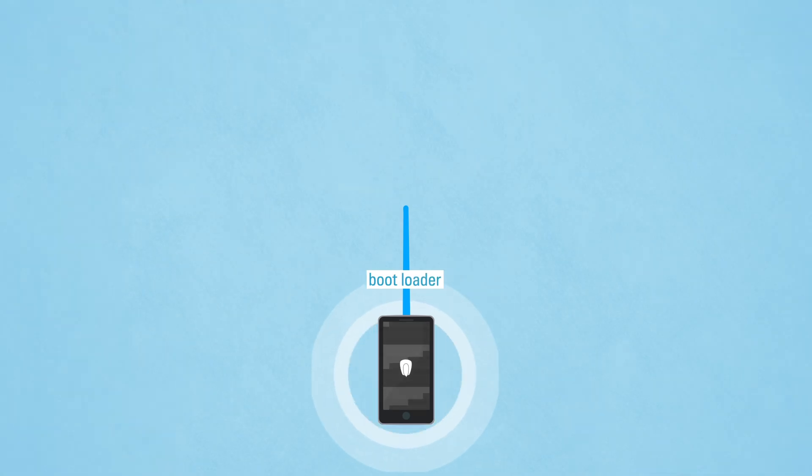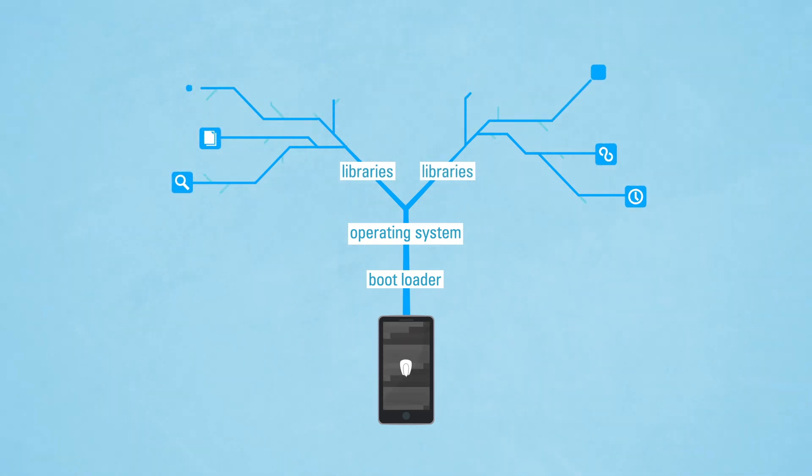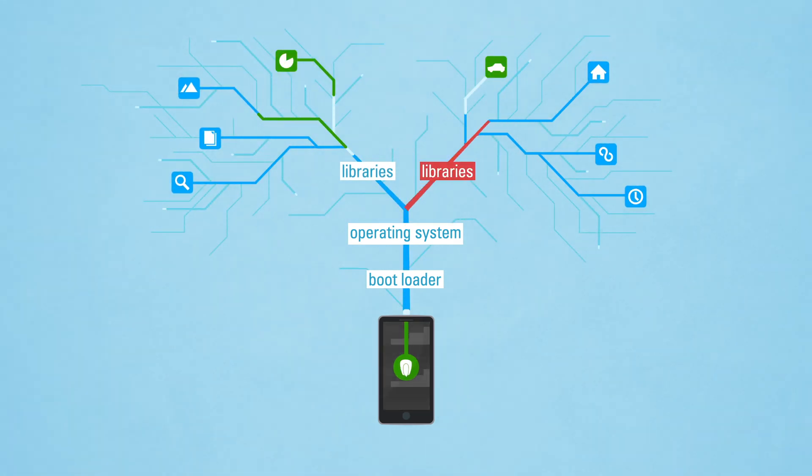We start with the mobile root of trust that says this is the right operating system that booted, and then the operating system can tell us more about stuff that it's loading, and that stuff can tell you more about what it's loading, and so on and so forth.